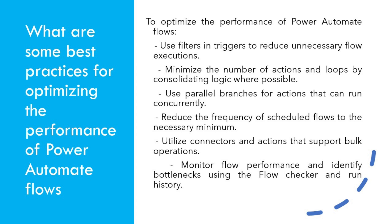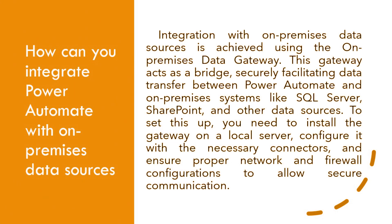Save and monitor flow performance and identify bottlenecks using the flow checker and run history. How can you integrate Power Automate with on-premises data sources? Integration with on-premises data sources is achieved using the on-premises data gateway. This gateway acts as a bridge, securely facilitating data transfer between Power Automate and on-premises systems like SQL Server, SharePoint, and other data sources. To set this up, you need to install the gateway on a local server, configure it with the necessary connectors, and ensure proper network and firewall configurations to allow secure communication.